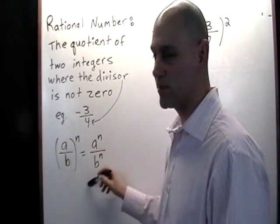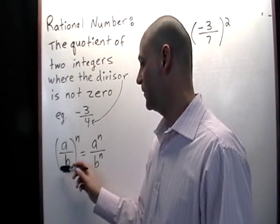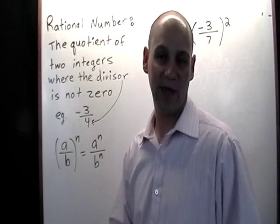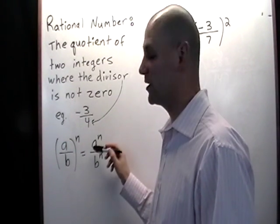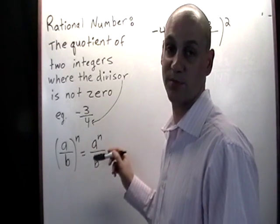So today we're going to be using this expression here which says that if you have a rational number a over b and that whole expression is to the power n, that's the same thing as a by itself to the exponent n divided by b by itself to the exponent n.